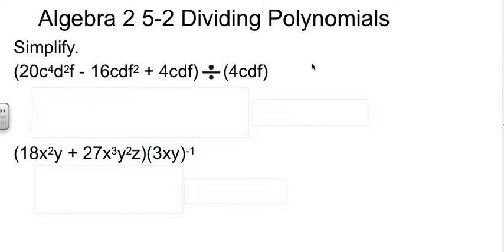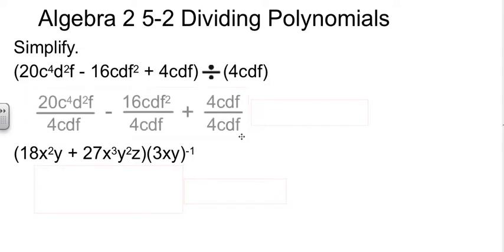There are three different types of division problems. One type is like the first few here, where you are dividing by a single-term thing. When you have that situation where you're dividing by a single-term thing, the best thing to do is put it underneath each term.